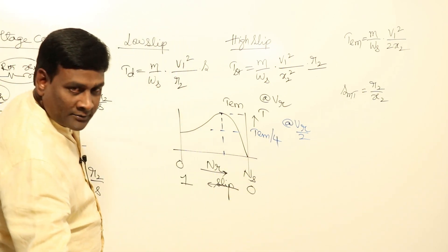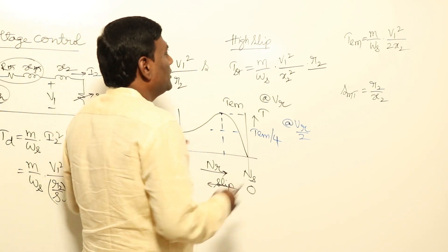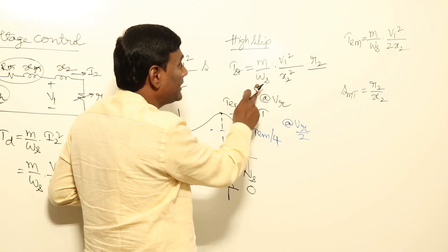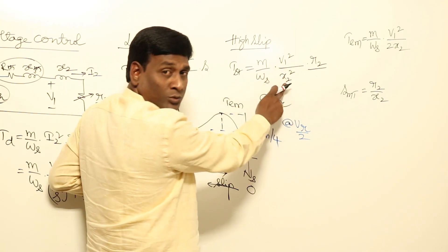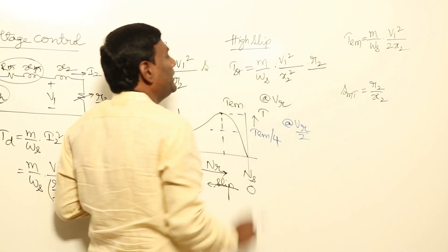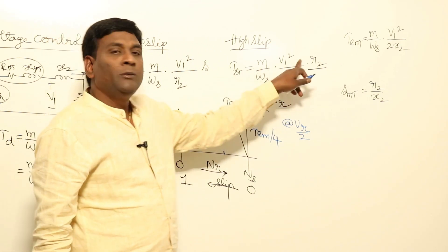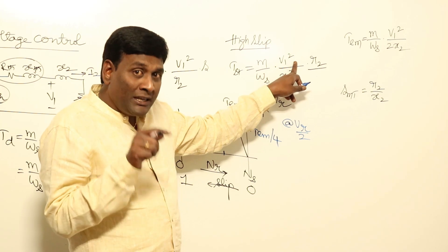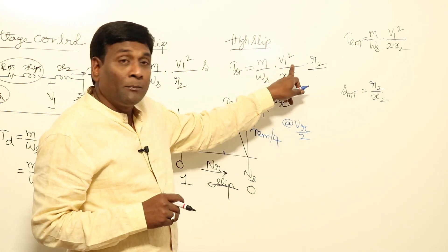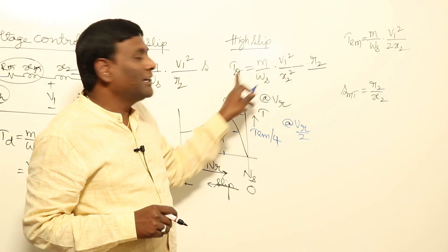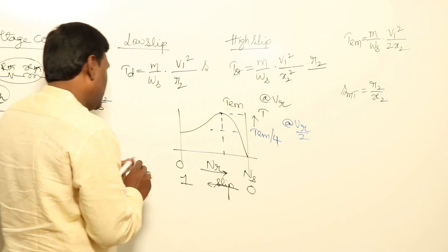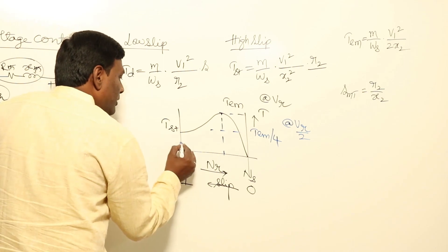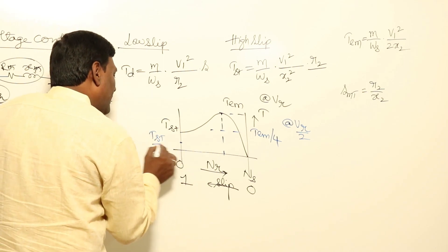Now let us think of starting torque. M by omega_S is not varying, only V1 is varying. X2 and R2 are not varying. So starting torque is directly proportional to supply voltage squared. If supply voltage becomes half, starting torque will be reduced to one-fourth — TST by 4.